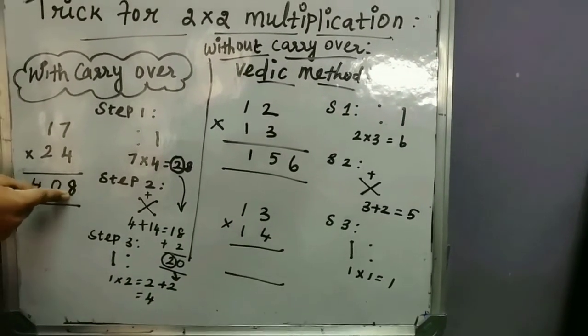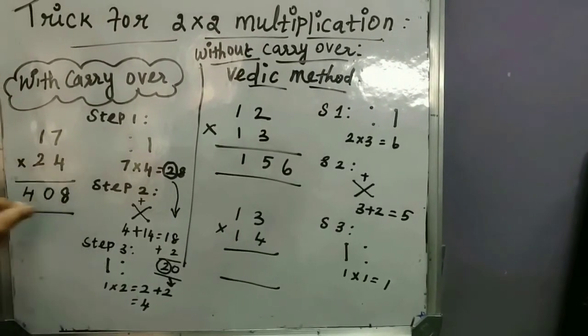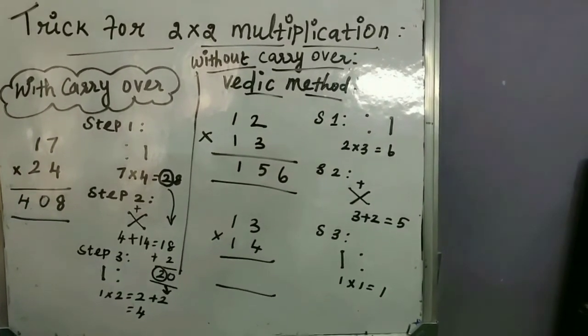So 2 plus 2 is 4, so the answer is 408. See, two digit by two digit, we are getting the answer within the single step. Thank you.